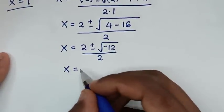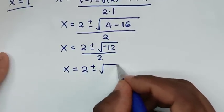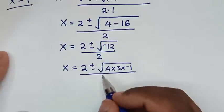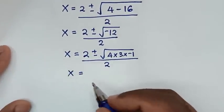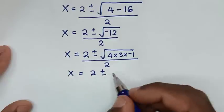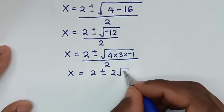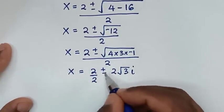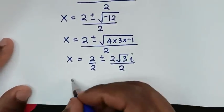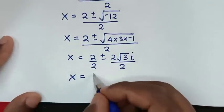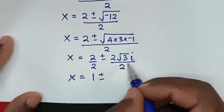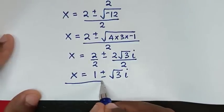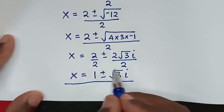Then x equals 2 plus or minus square root of negative 12, which is the same as 4 times 3 times negative 1, over 2. The square root of 4 is 2, times square root of 3, times square root of negative 1 which is i. Dividing by 2 gives x equals 1 plus or minus square root of 3 times i. These are two complex solutions.